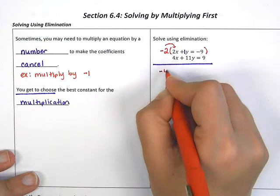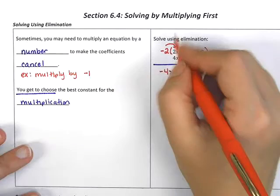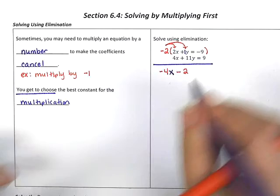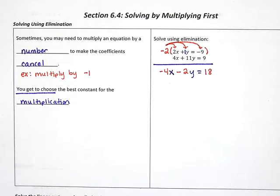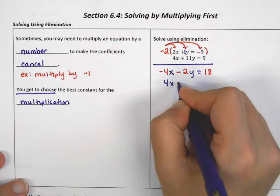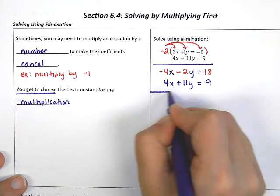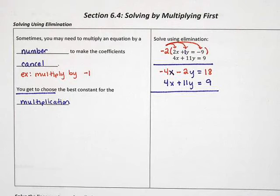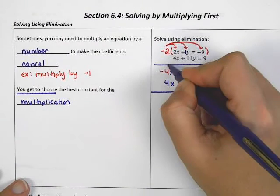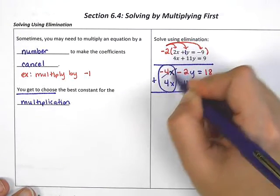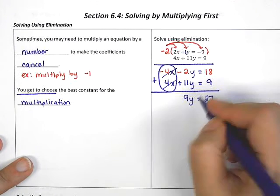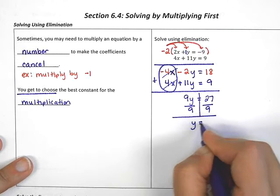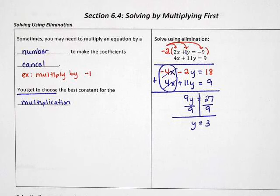If I distribute the negative 2, I get negative 4x. Then negative 2 times 1 gives me negative 2y, and negative 2 times negative 9 gives me positive 18. The second equation doesn't change, so it remains 4x plus 11y equals 9. Now the negative 4 and the positive 4 will cancel. So adding gives me negative 2y plus 11y equals 9y, and 18 plus 9 equals 27. Dividing by 9 on both sides, I get y equals 3. Multiplying by negative 2 made some of my variables cancel, and I got to pick what number to choose.